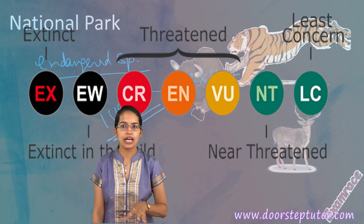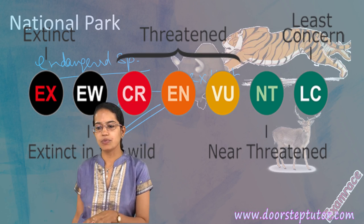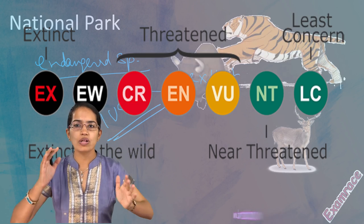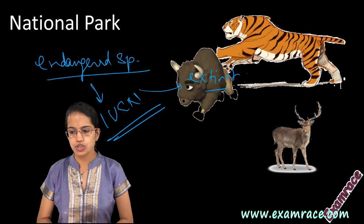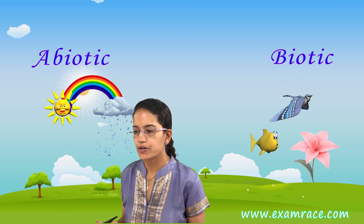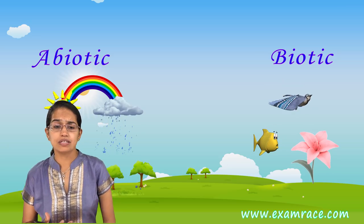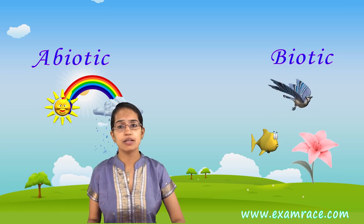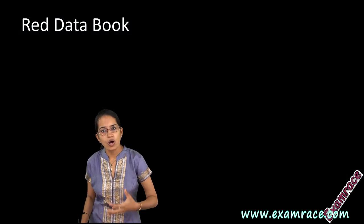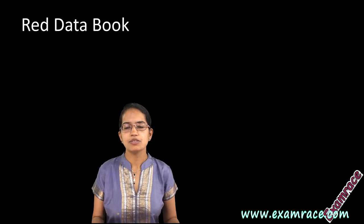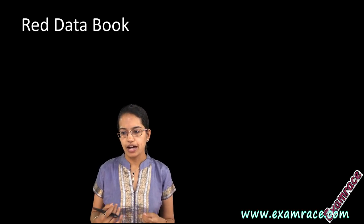A separate lecture covers IUCN classification and the red data book in detail, with all categories under IUCN. The ecosystem, as we know, is an interaction of the biotic and abiotic components — the living and non-living components. Maintaining and preserving the ecosystem is a very important aspect in national parks. The red data book keeps the record of all endangered species and has been maintained internationally by IUCN. India also maintains its own red data book for plants and animals.